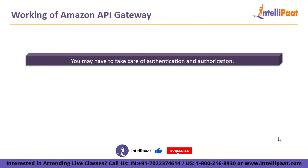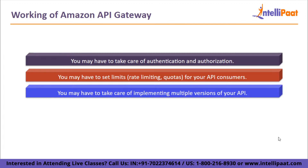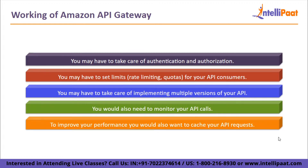Most applications today are built around REST APIs — you have GET, POST, PUT, DELETE requests. You make an API call and get things done. However, managing REST APIs is not easy. You may have to take care of authentication and authorization, set limits like rate limits and quotas for your API consumers, implement multiple versions of your API, monitor your API calls, and cache your API requests to improve performance. A fully managed service with AWS autoscaling acts as an abstract layer to your APIs — this is how Amazon API Gateway works.